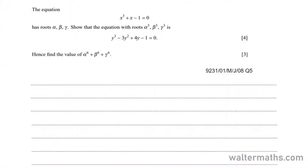Here we've got an example. The equation x cubed plus x minus 1 equal to 0 has roots alpha, beta, gamma. Show that the equation with roots alpha cubed, beta cubed, gamma cubed is y cubed minus 3y squared plus 4y minus 1 equal to 0. Hence find the value of alpha to the power 6 plus beta to the power 6 plus gamma to the power of 6.